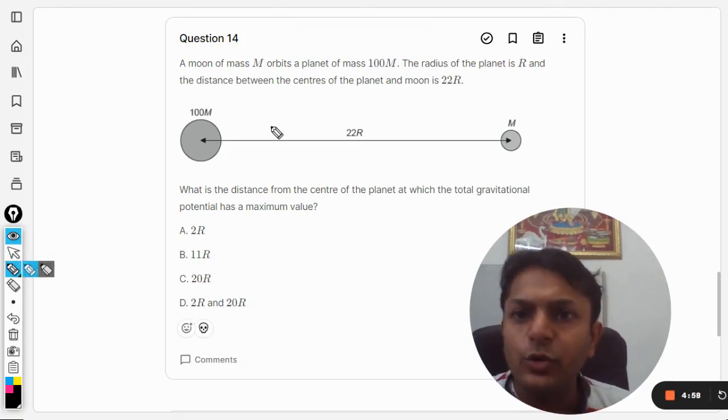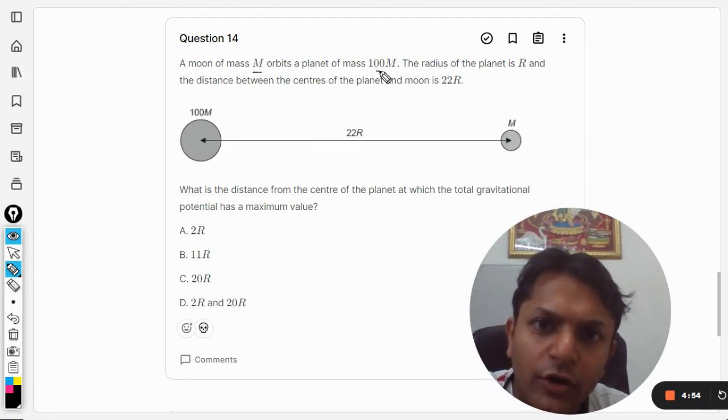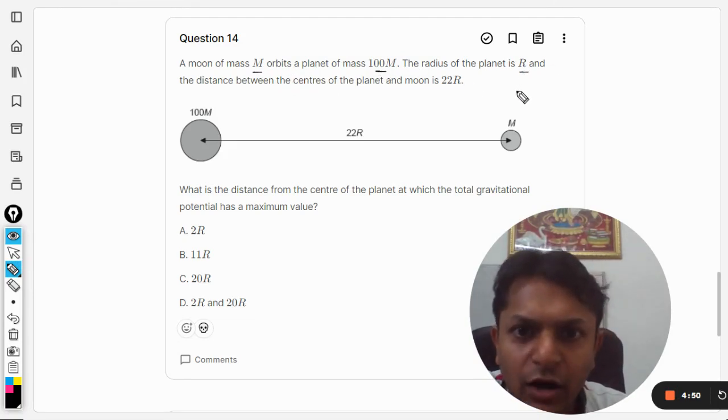Area students, let's see what is there in this question. A moon of mass m orbits a planet of mass 100m. The radius of the planet is r and the distance between the center of the planet and the moon is 22r.